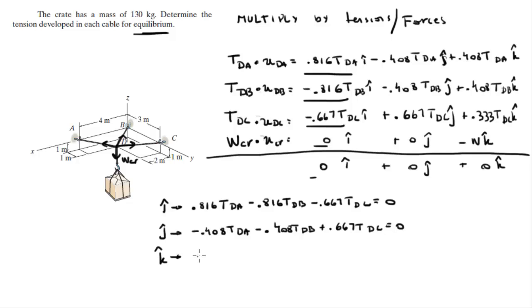Last one, 0.408 TDA plus 0.408 TDB plus 0.333 TDC is equal to - sorry - is equal to the weight. Minus the weight equal to 0, but I just put the weight at the other side of the equation. Let me make that a period of W.